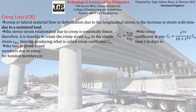With that, the loss in pre-stress members due to creep for bonded members is equal to this formula. This is how you can compute the magnitude of pre-stress loss due to creep. You just have to multiply the creep coefficient with the corresponding factor for time, multiplied by what we call the modular ratio — the ratio of the modulus of elasticity of the pre-stressing reinforcement and the concrete itself — multiplied by the concrete stress acting on the level of the pre-stressing reinforcement.